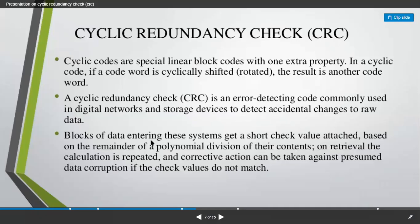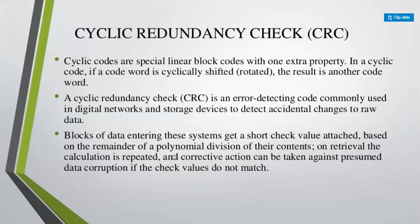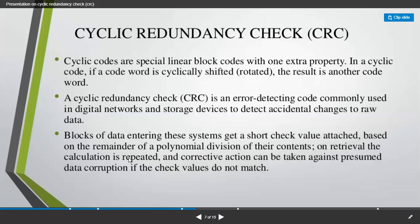The blocks of data entering inside your system will have one check value which is going to be attached — we will see how it is attached in our example. We follow the process of cyclic redundancy check and get a reminder, which is attached to the code word, and the calculation process is repeated. If at the end the reminder value is zero and there is no corruption of data, then whatever data values have come are correct. The same thing can also be applied for polynomial division — both things we are going to see through an example.